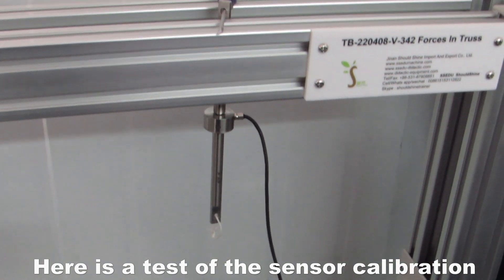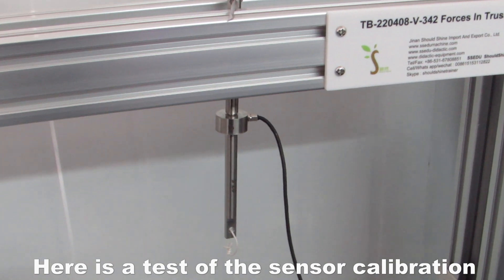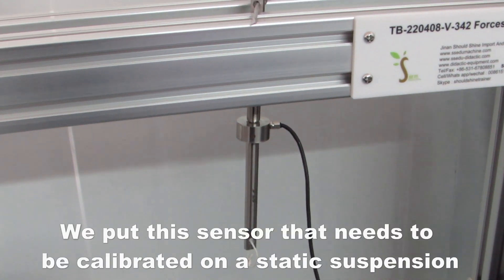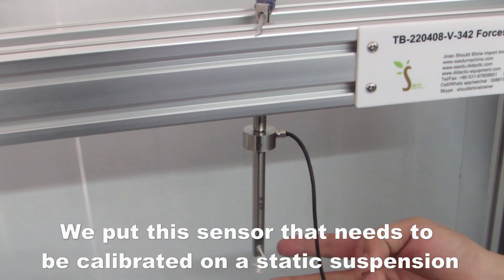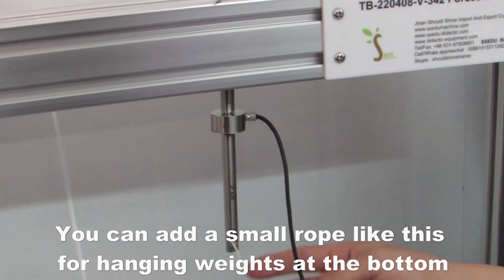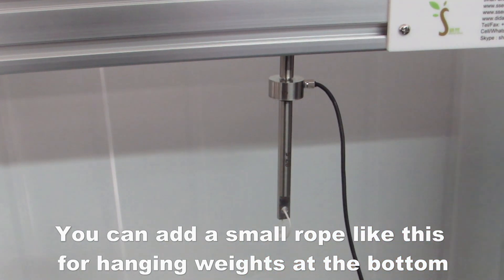Here is a test of the sensor calibration. To calibrate, the first step is to put this sensor that needs to be calibrated on a static suspension. You can add a small rope like this for hanging weights at the bottom.